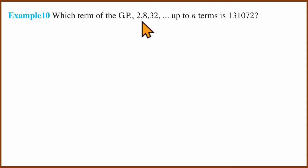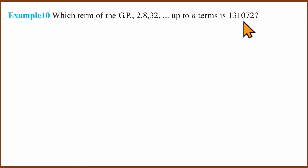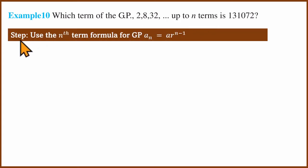Second question: which term of the GP 2, 8, 32... equals 131072? The first term is 2 and the common ratio is 4, since 2 times 4 is 8 and 8 times 4 is 32. We need to find which term equals 131072. We use the nth term formula: An equals a multiplied by r to the power n-1.